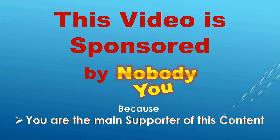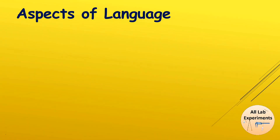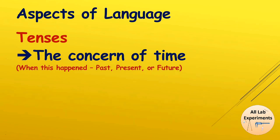Now let us start discussing the language aspects of writing a research paper. We will discuss tenses — what kind of tenses you should use in each part — and some other general knowledge things to take care of while writing. Basically, tenses express two things: first, the concern of time, meaning when this event happened — whether in past, present, or future. Second, tenses tell us whether the information is open or closed.